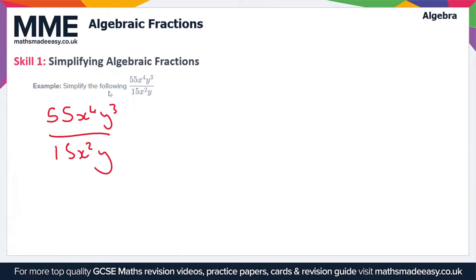So that means just cancel out all the terms until we're left with the fraction in its simplest form. I'm going to rewrite this first of all as three fractions multiplied together: 55 over 15, multiplied by x to the 4 over x squared, multiplied by y cubed over y. You don't have to do this, but I think it's clear to break it up into its individual terms so you can see what cancels with what.